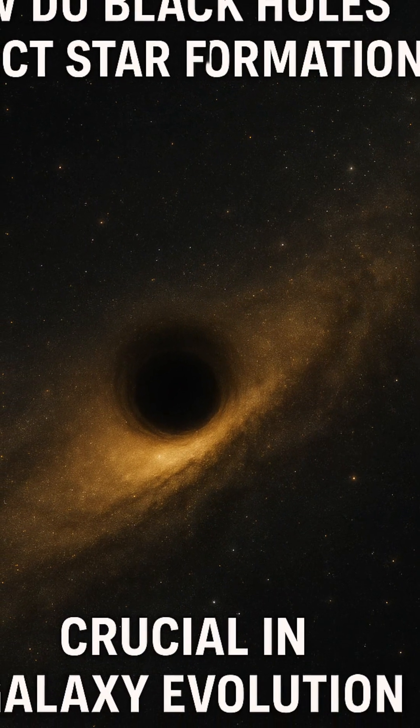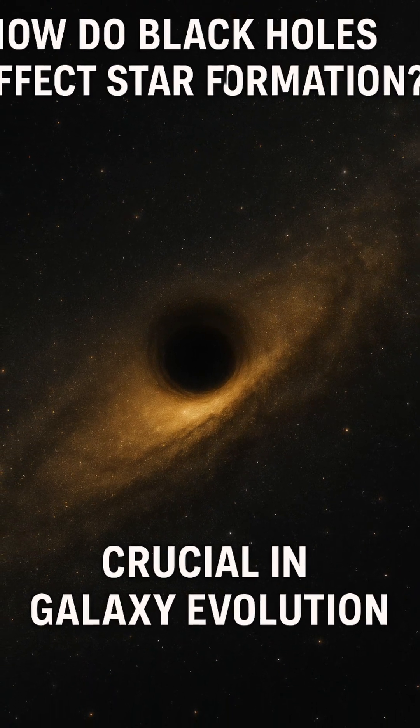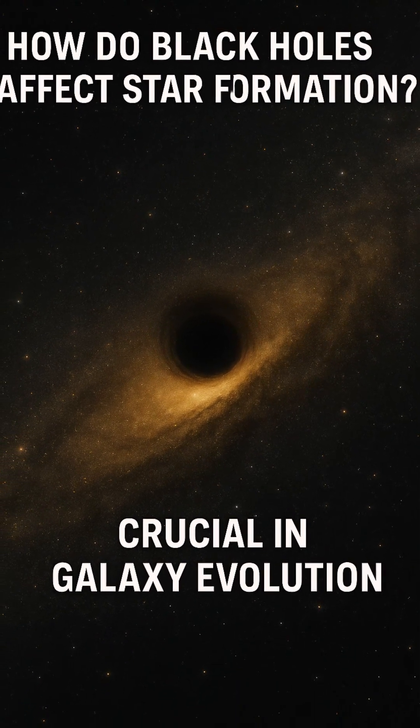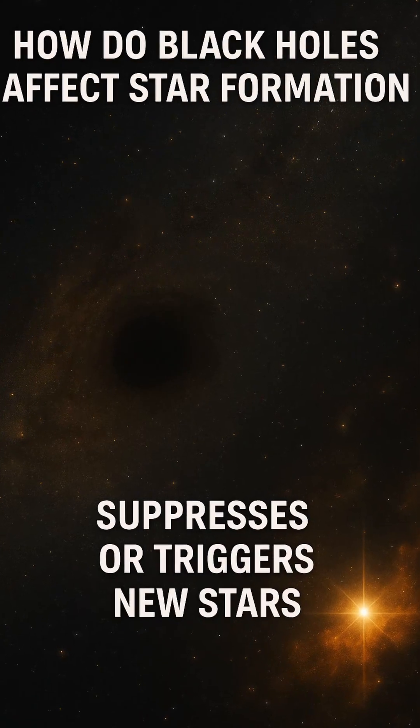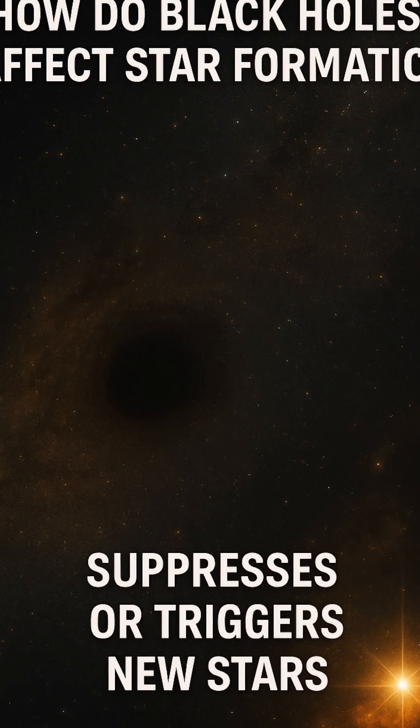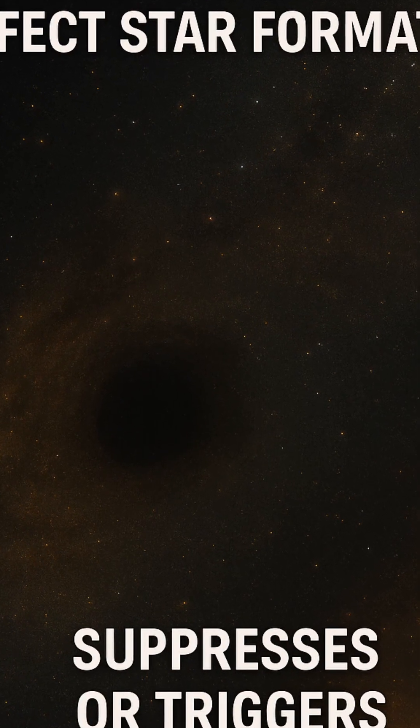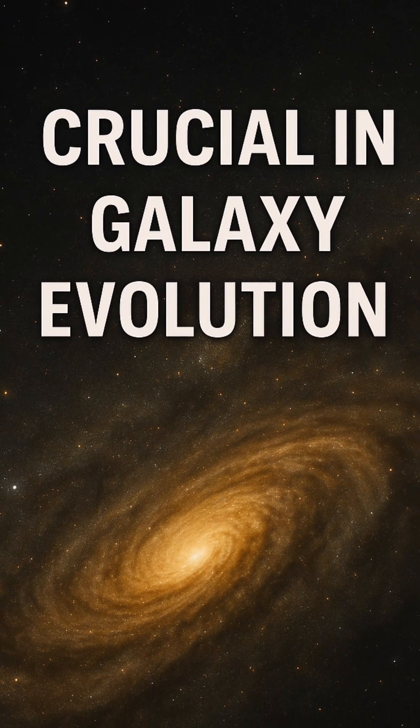In certain cases, black hole feedback can trigger star formation. When outflows from jets or winds slam into dense clouds of gas, they can compress them, providing the necessary conditions for gravitational collapse. This shock-induced compression can ignite bursts of star birth, especially in the outer regions of galaxies or at sites where gas was previously stable.